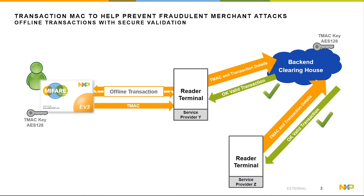In the server back-end, the same Transaction MAC key needs to be present, which is also stored on the card. Once the back-end receives all transaction-relevant details, it can recalculate the Transaction MAC and check if the values match. In case the server back-end can recalculate the same value, it is ensured that the executed offline transactions were valid, authentic, and can be trusted.